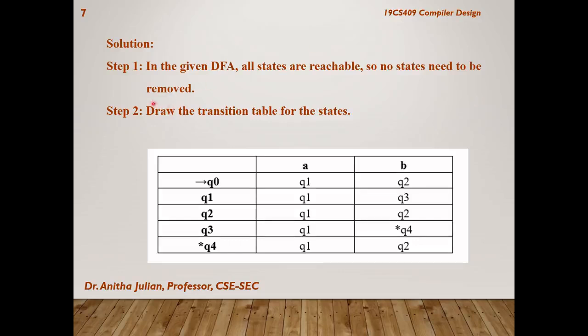Here as you can see all states are reachable when we saw in the diagram. So, no states need to be removed. We have to retain all the states and draw the transition table. So, we have five states for which we have drawn the table as per the given diagram.